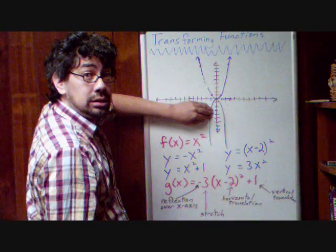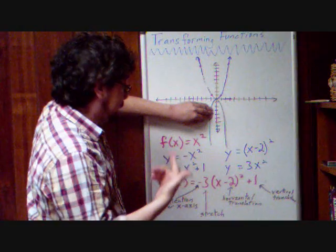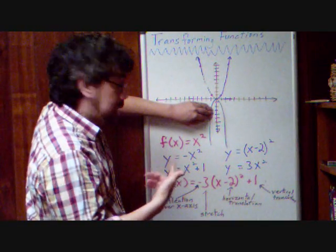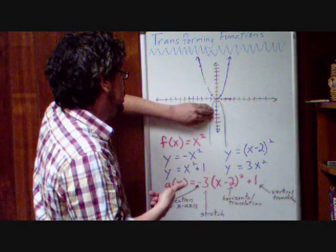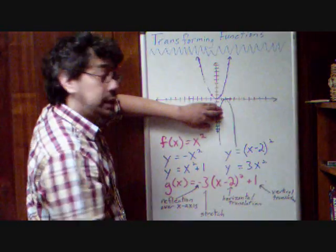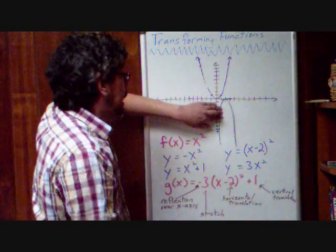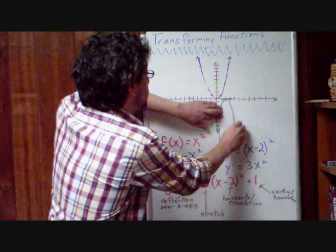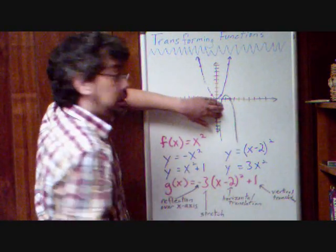The minus 2 inside, that's left or right, but as we said, it's opposite sign. So that's positive direction. 1, 2. And then finally, my vertical translation going up or down. I'm going to go up one space. And there's my graph.